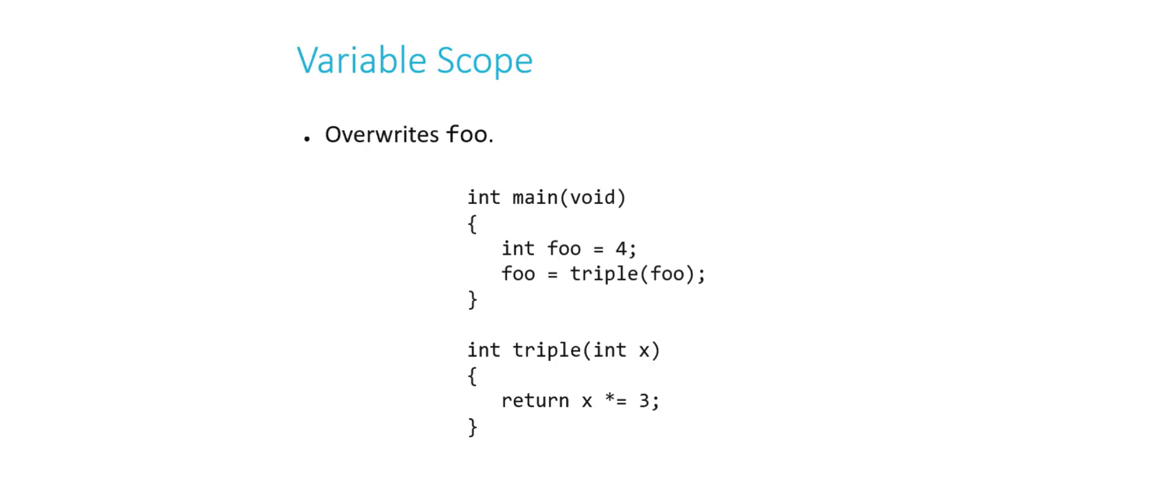So int foo equals 4, foo equals triple foo. When we make that call, triple gets its own copy of foo, its own copy of 4. It says return 4 times 3, or whatever variable gets passed in times 3. And then we assign the return value of triple to foo again. So this actually would overwrite foo. This is the only way to do this with local variables.